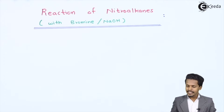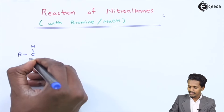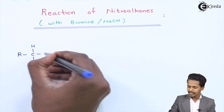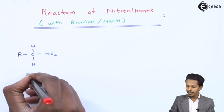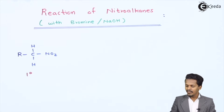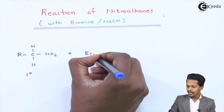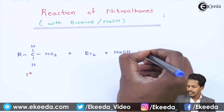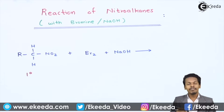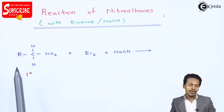Now let me talk about the first one. Suppose we are considering a primary nitroalkane, represented as RCH2NO2. Suppose if we react it with Br2 in the presence of NaOH — that is, in an alkaline medium — the reaction proceeds such that the halogen atoms are substituted on the alpha-carbon atom.